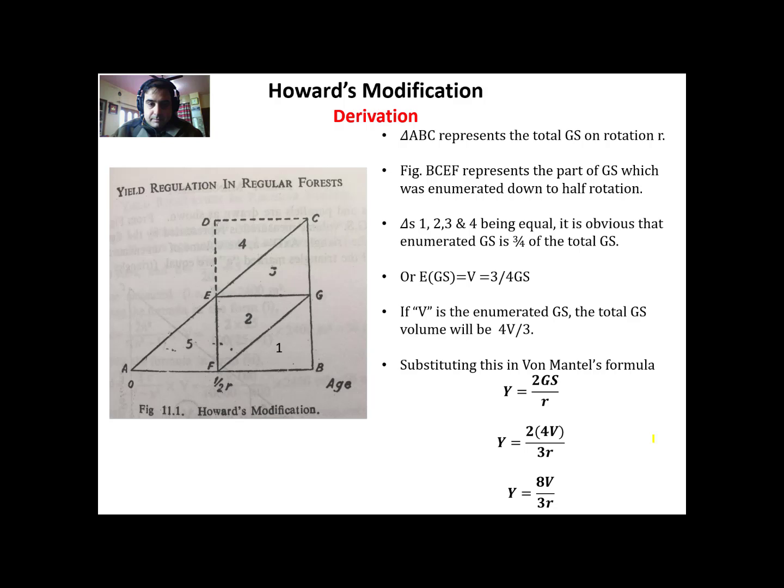As you can see in this diagram, triangle ABC represents the total growing stock. Howard said instead of enumerating the growing stock down to the lowest diameter, let us reduce the enumeration to half of the rotation. So ABC is the total growing stock, while smaller triangles 1, 2, and 3 represent the enumerated growing stock.